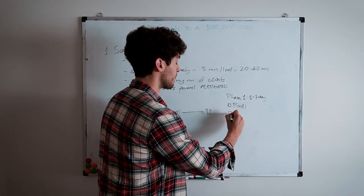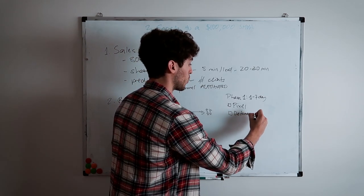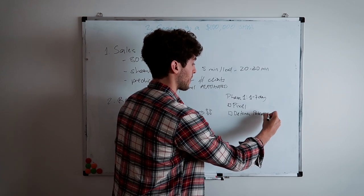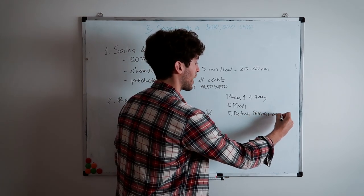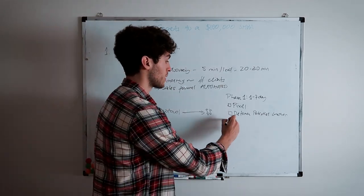Then the second thing, for example, could be determine potential creatives. So those creatives that they've given you that have potential to run as, for example, top of the funnel, middle of the funnel, bottom of the funnel, which actually brings me to the second thing, which is you should have a funnel structure.